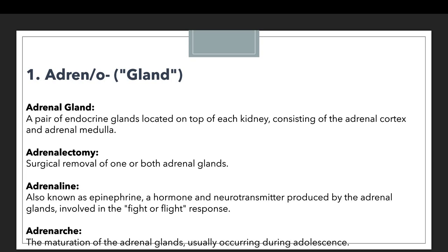Let's look at the first example, which is adrenal gland. Adrenal gland means a pair of endocrine glands located on top of each kidney, consisting of the adrenal cortex and adrenal medulla. This term is composed with the prefix adren, denoting something related to gland.